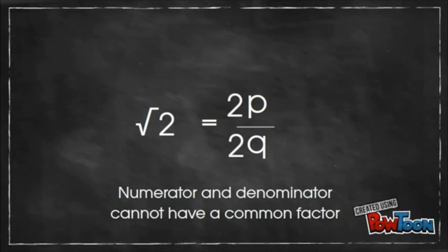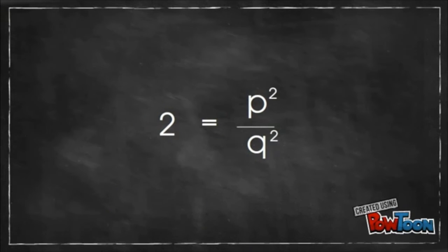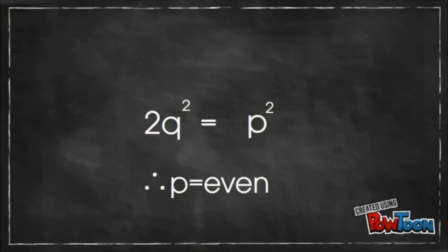His proof went as follows. If root 2 could be written as a fraction, the numerator and denominator could not have a common factor, because it would have to be fully simplified. He isolated p and found that it had to be even, since anything multiplied by 2 becomes even. Since p was even, he could write it as 2a.